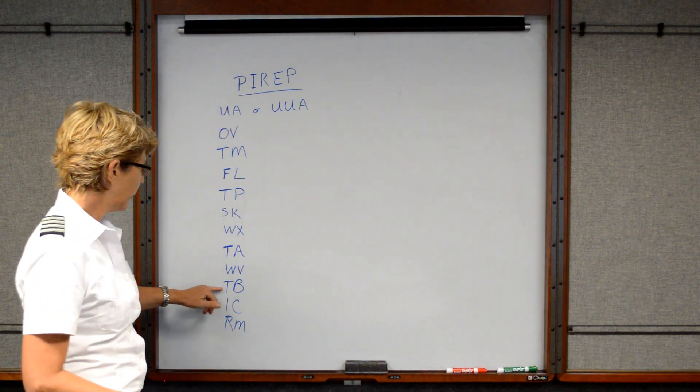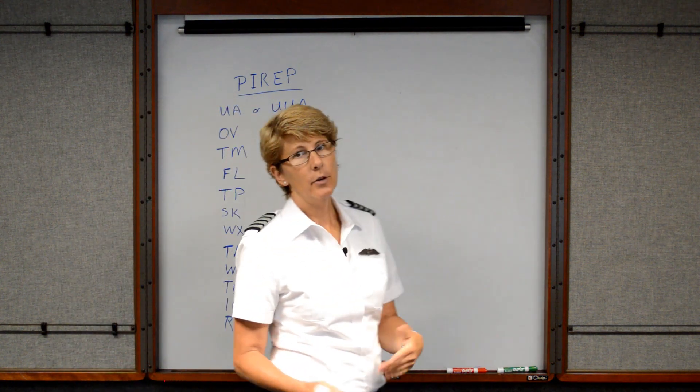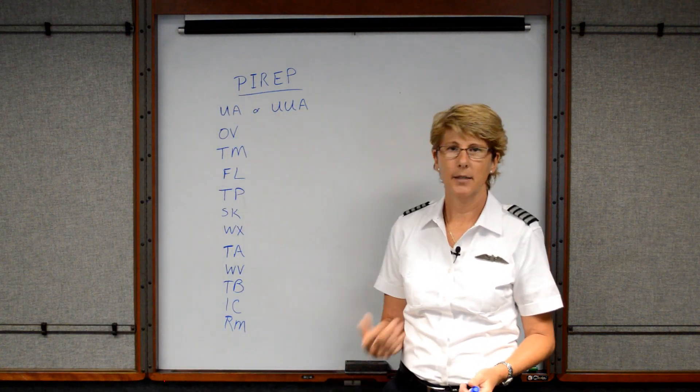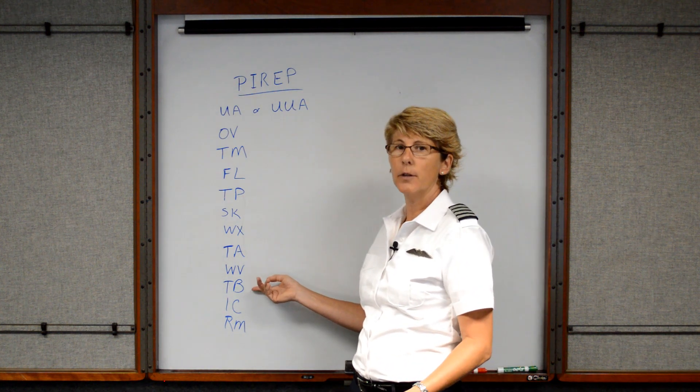Next is turbulence. So maybe you have a smooth ride. If there's no turbulence, then you simply report it as negative turbulence. Or you could report it as light or moderate or severe.